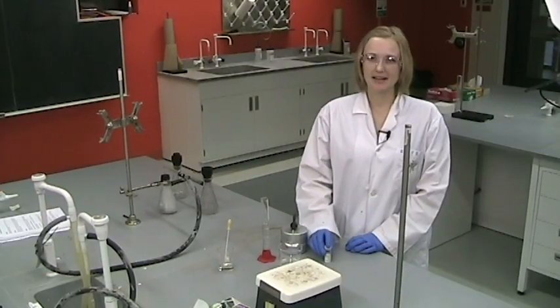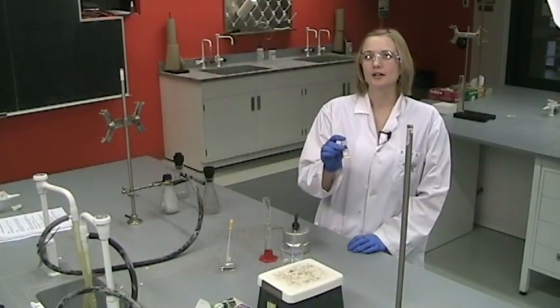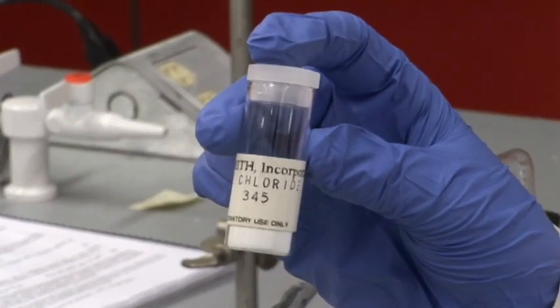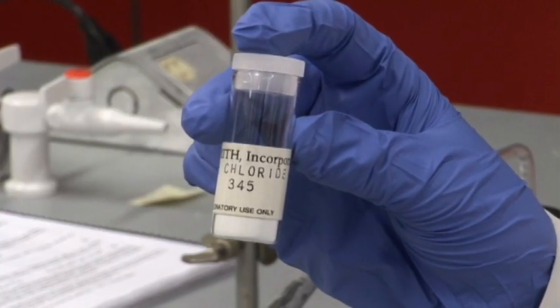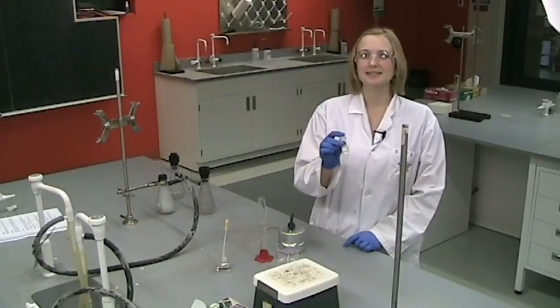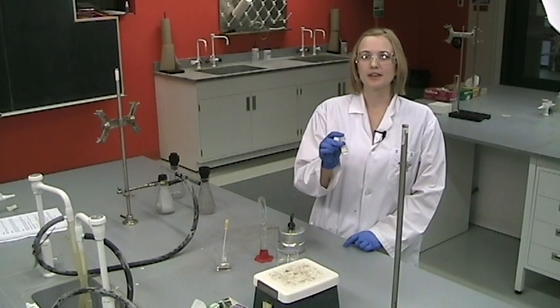You'll start by getting a salt sample which has a number on it. That is because these are unknown salts with different percentages of chloride by mass. You'll need to record the sample number so that at the end of the lab your TA can give you the accepted percentage of chloride in the salt and you want to make sure you get the right number.